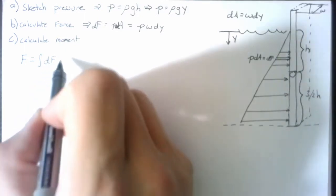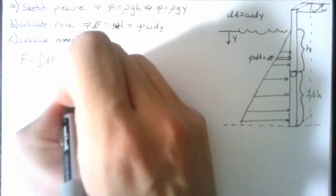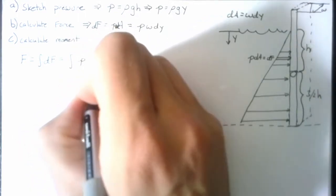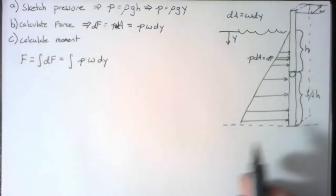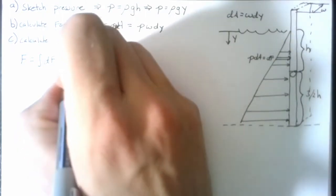But we can rewrite this as the integral of pressure w dy. And now I can say that this is integrated from h to 5 halves h.